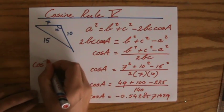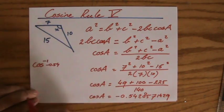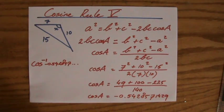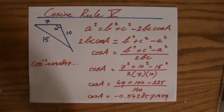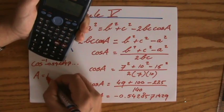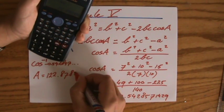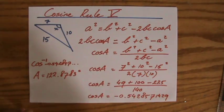Well, I do the inverse of minus 0.542857. So I grab my calculator. Shift cosine of that particular answer. And therefore, A equals 122.8783 degrees. And angles, indeed obtuse, like I expected.